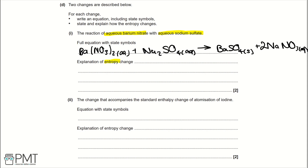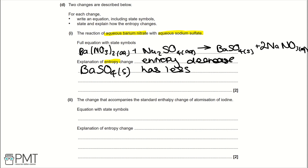We need to balance by putting a 2 in front of sodium nitrate. Entropy is a measure of disorder, and because we're forming a solid, entropy will decrease. The reason is that BaSO₄ solid has less disorder. To get the two marks, you need the equation correctly balanced with the correct state symbols, and you need to say entropy is decreasing.